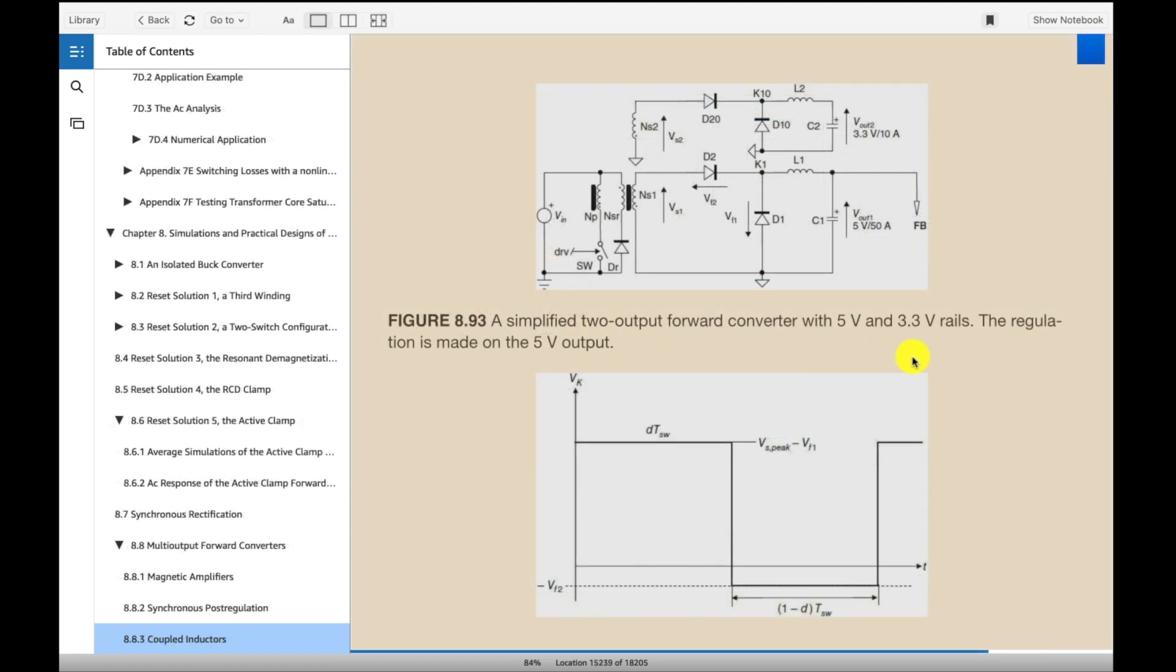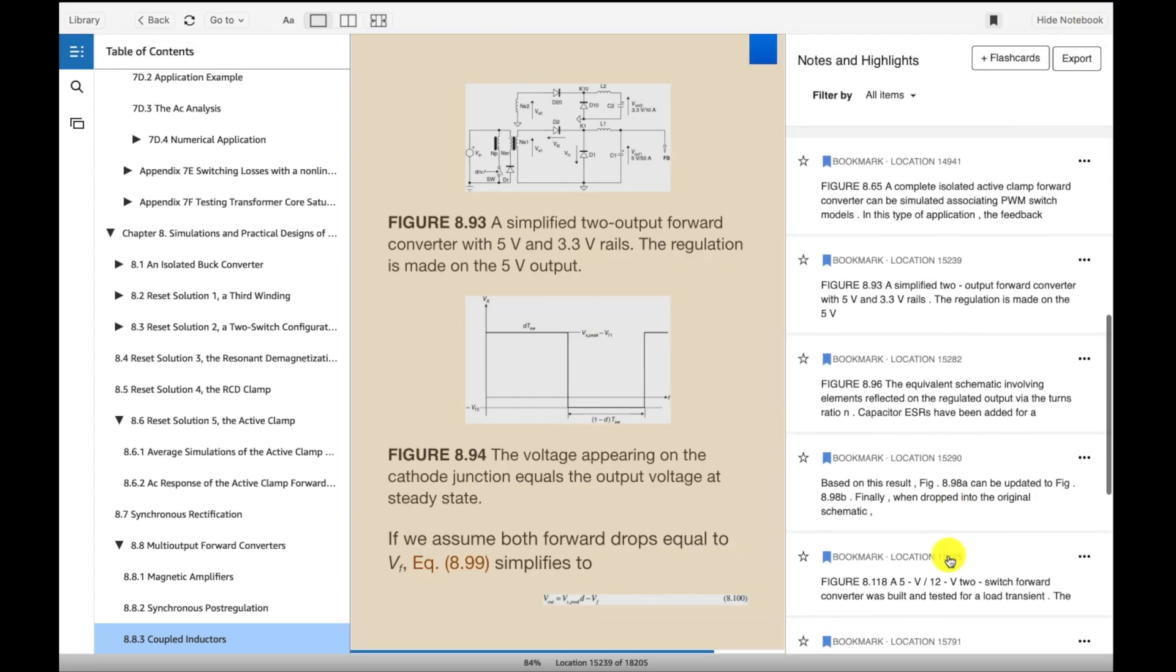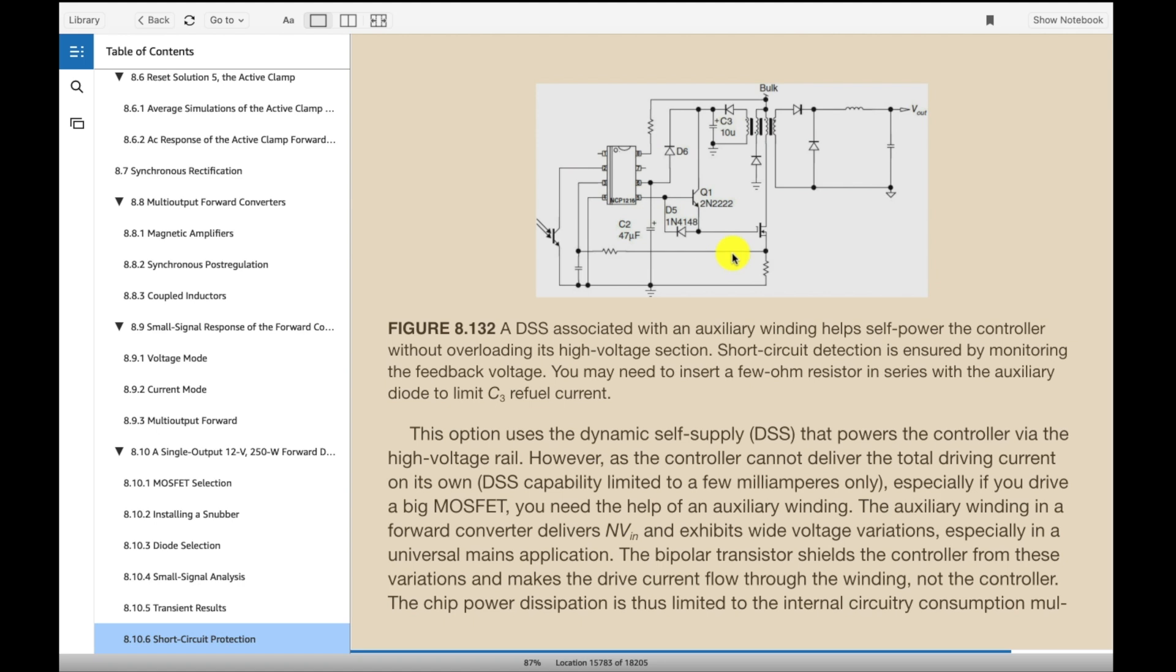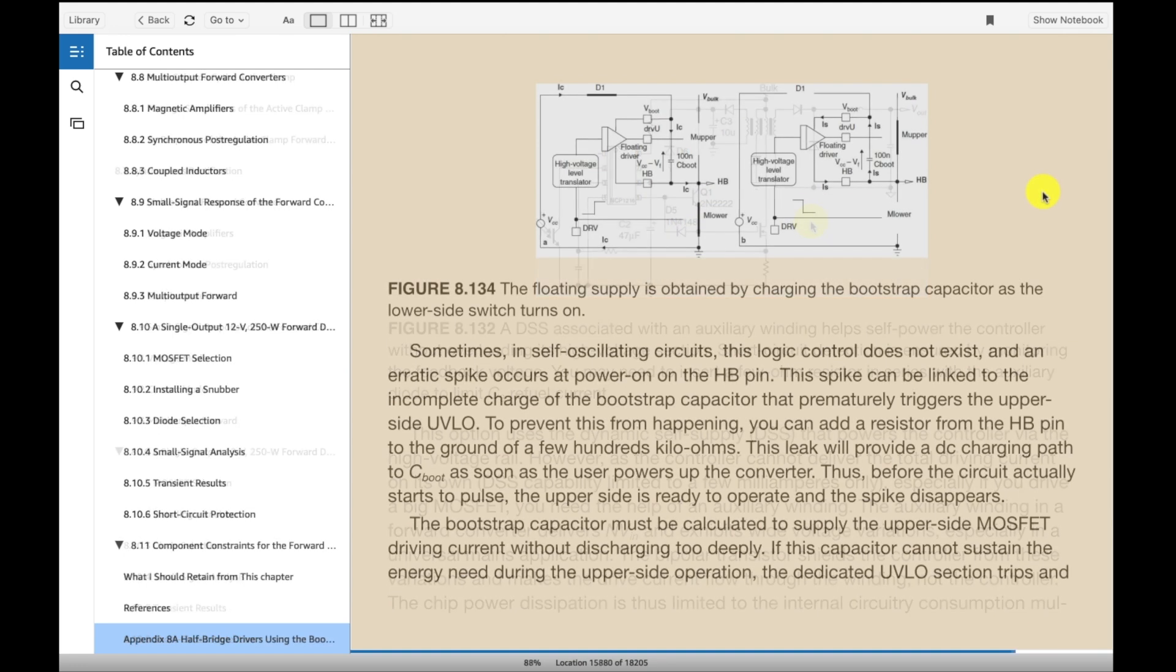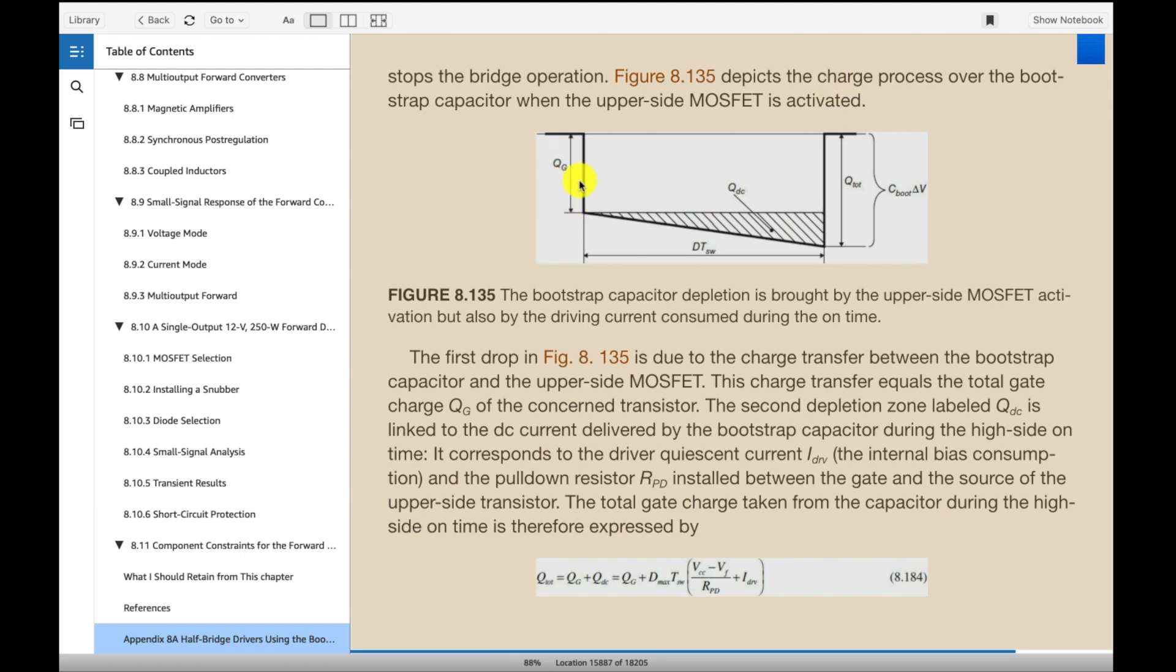And here's a forward converter might be interesting for you to look at. The transformer here with two outputs on it. Just kind of giving you some examples. Now, here's another example of the forward converter. Shows the auxiliary winding for the feedback. Here's an example of the bootstrap capacitor. If you guys, you know, for the high side FET, you need to use a capacitor to charge to get the voltage to turn on the high side FET. And this talks about the capacitor, charging the capacitor, and the energy required formula down here. Just wanted to kind of show you the different types of things that he goes into detail on.